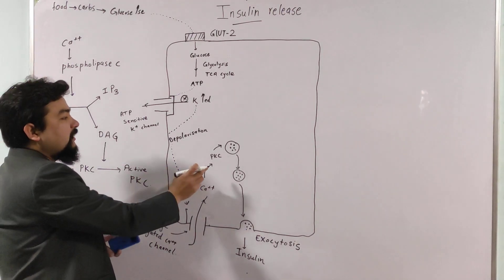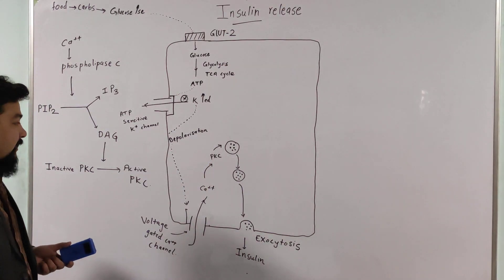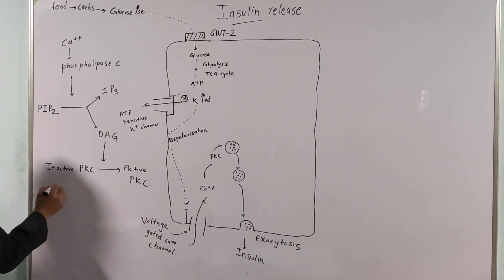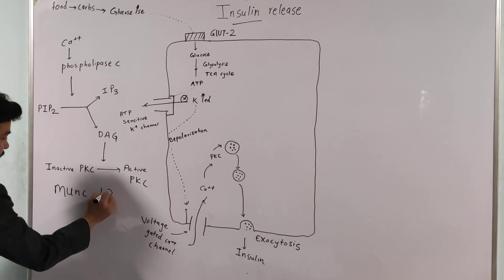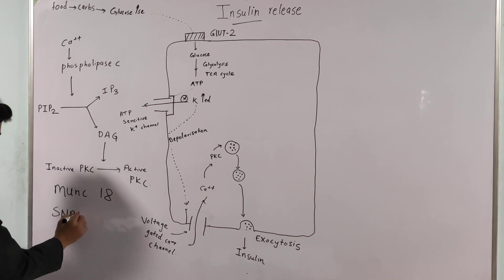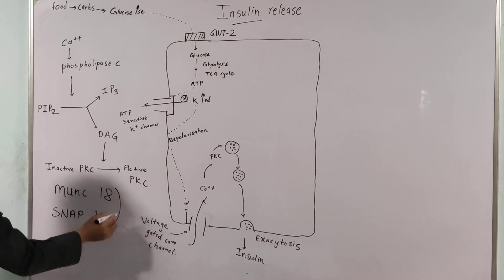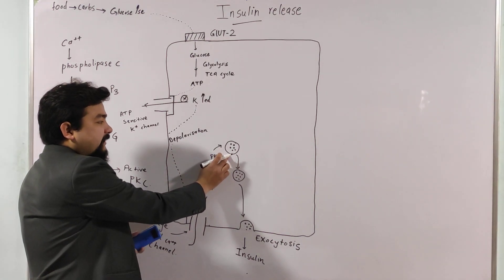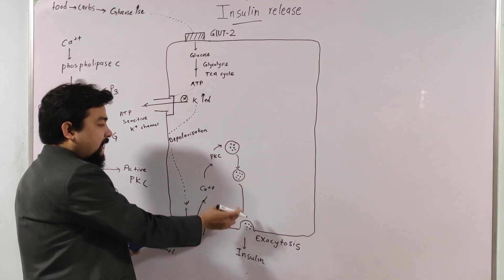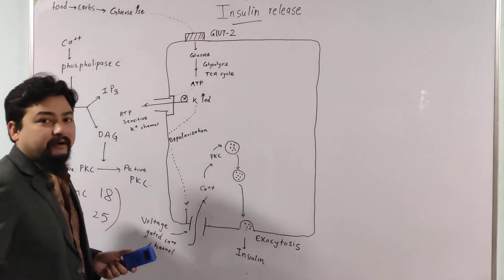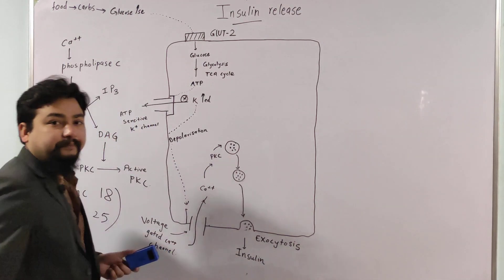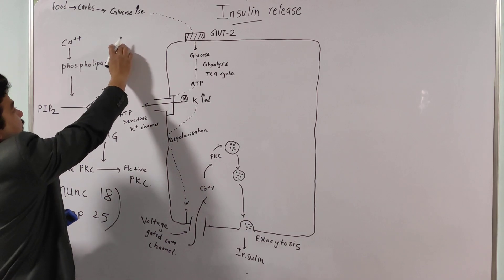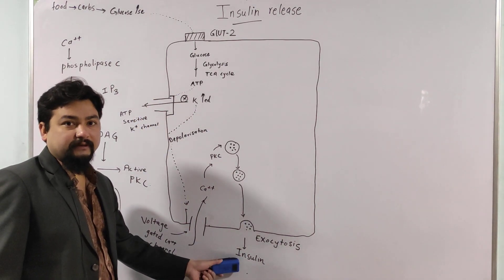Active protein kinase C has a number of functions inside the beta cell. First, it reorganizes the actin protein inside the beta cell. It also activates exocytotic proteins such as Munc18 and SNAP-25. Ultimately, all these processes propel the secretory granule toward the cell membrane, allowing the granule to fuse with the cell membrane, and exocytosis occurs to release insulin.